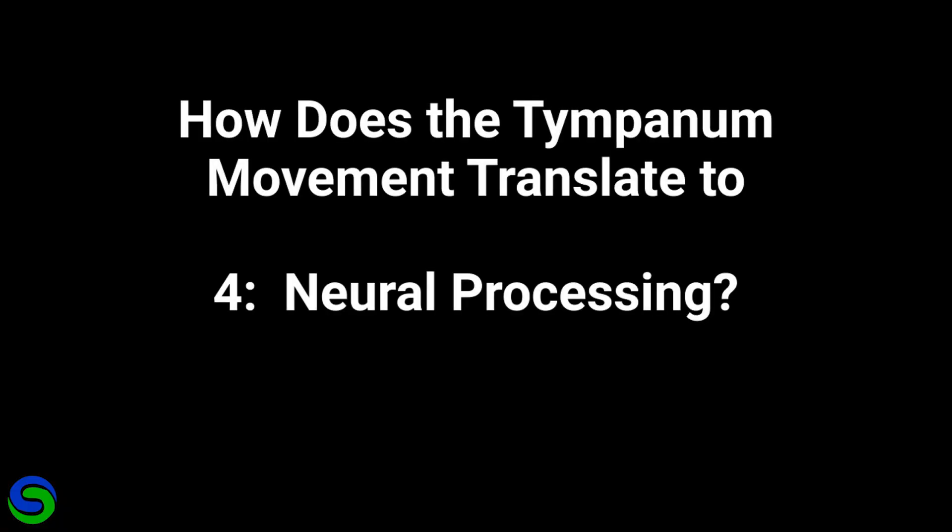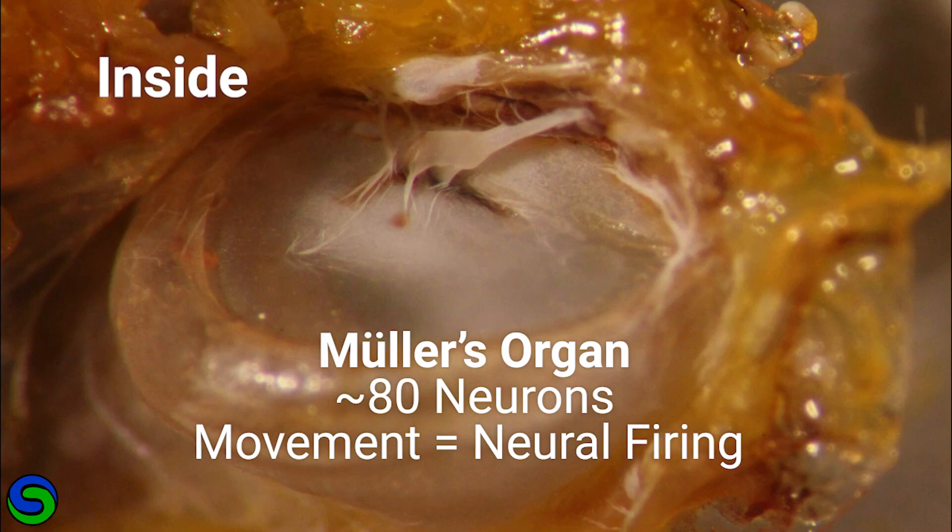Lastly, I want to discuss how the locust processes sound on a neural level. I mentioned Mueller's organ has about 80 neurons. These form an auditory nerve.